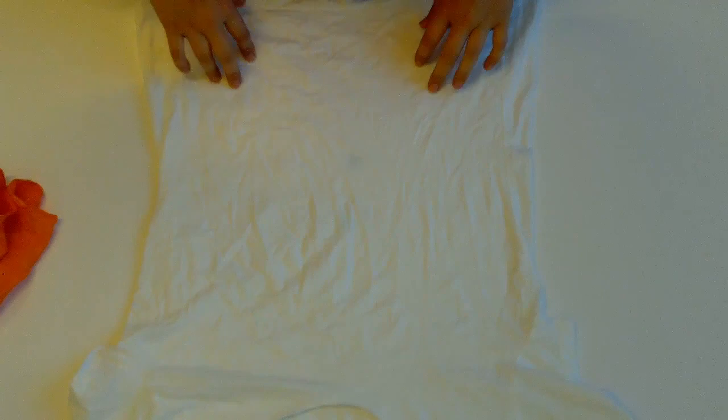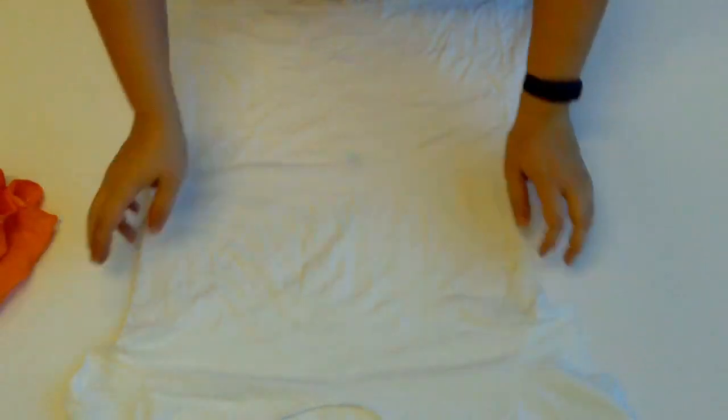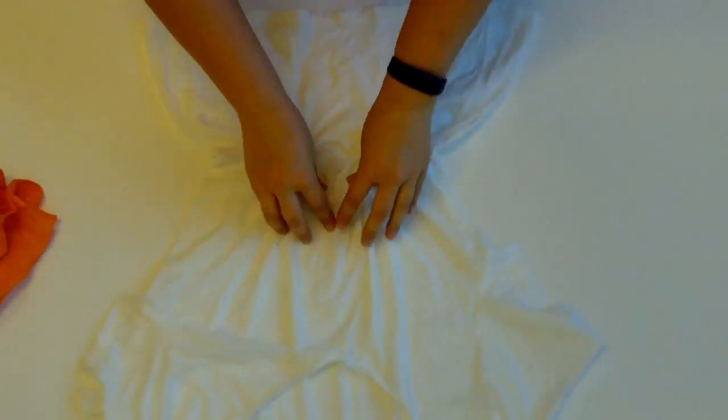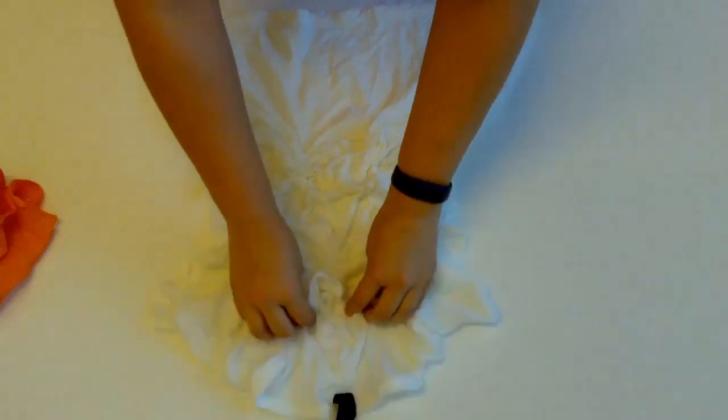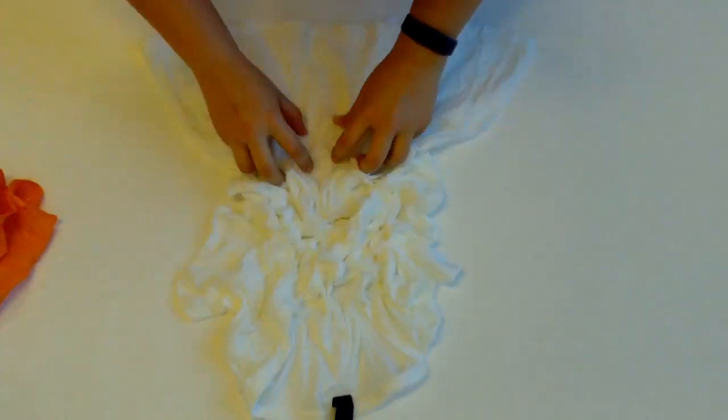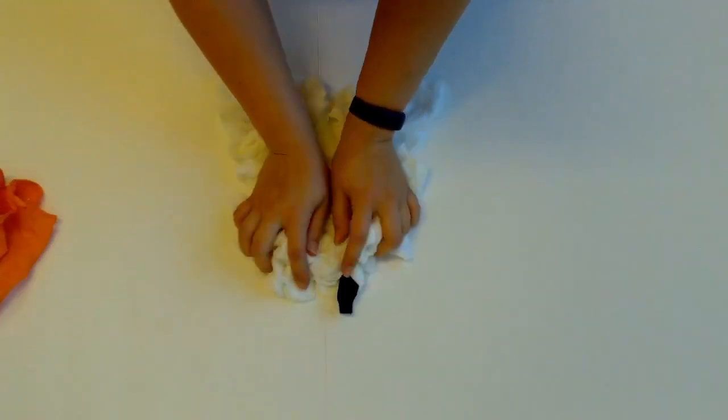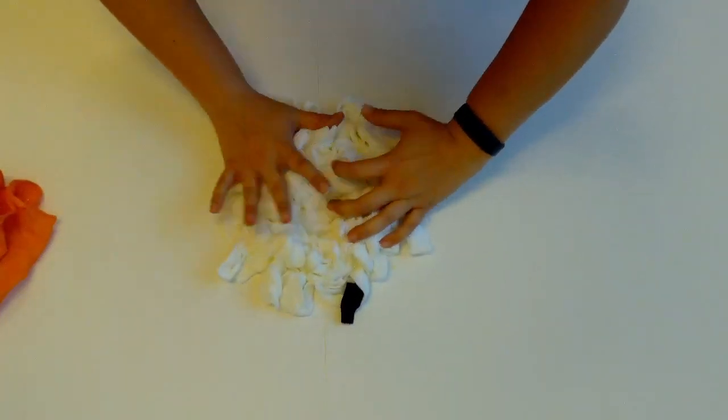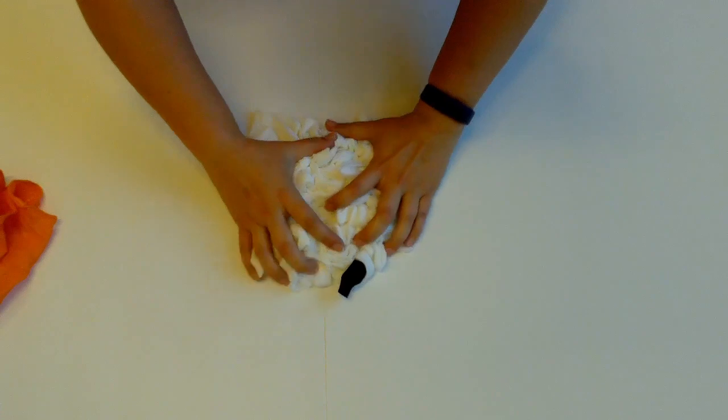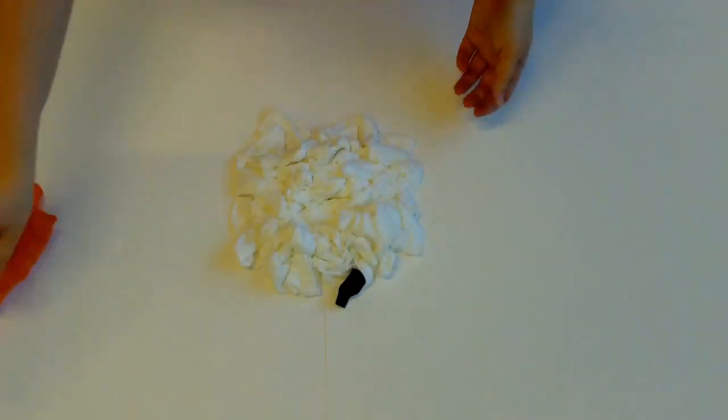For the crumple, lay the shirt out on a flat surface. Begin to scrunch up the shirt into a flat disc and secure with rubber bands.